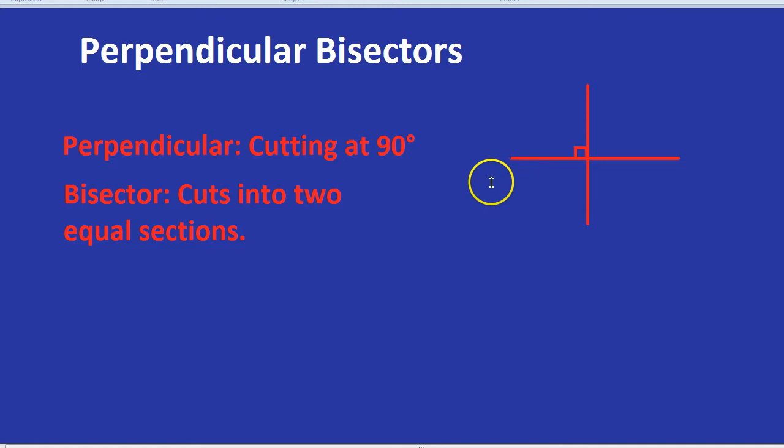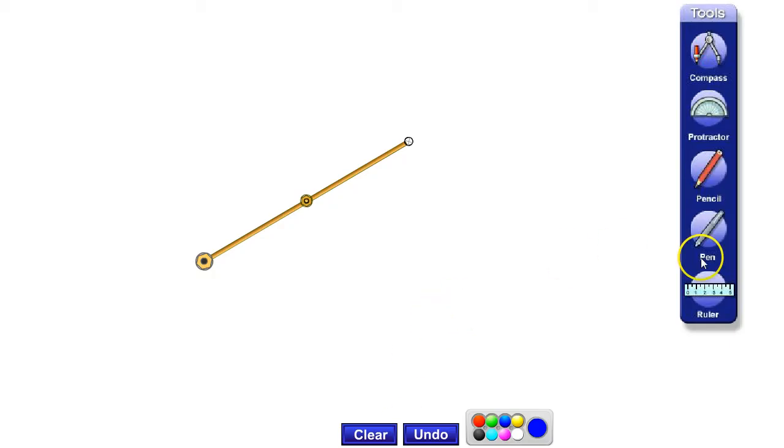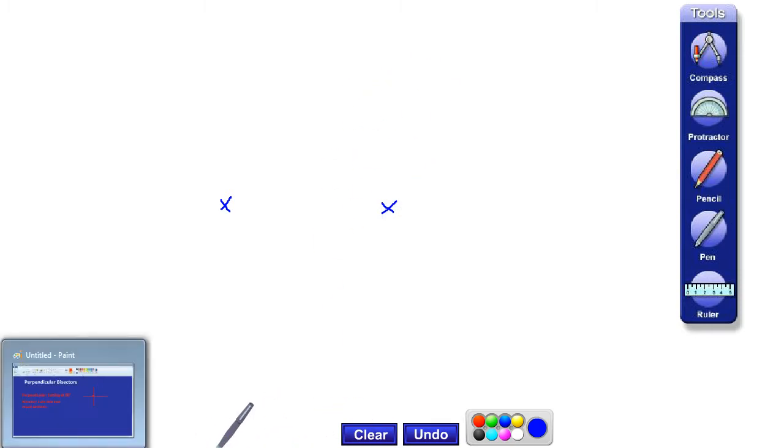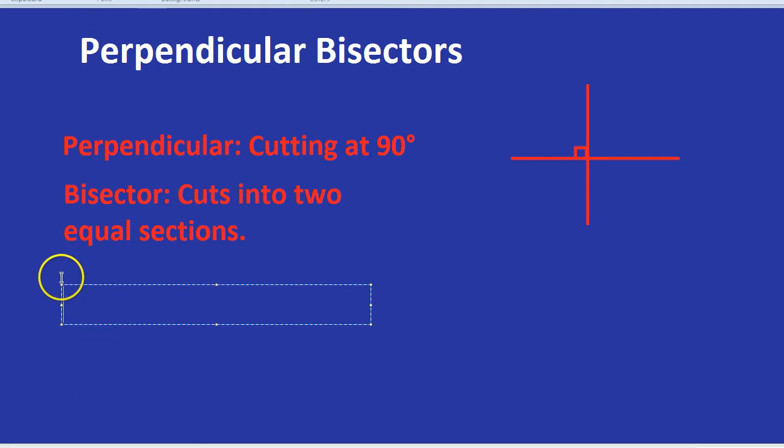Now we know where the word comes from, how would we actually draw it? For that I'm going to use some software from eMaths and I'm going to show you how to draw it. Okay, let's imagine our first point is here and our second point is here. And our question is, in the exam or just in real life, our question would be something like this.